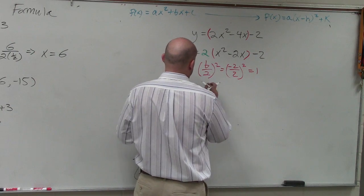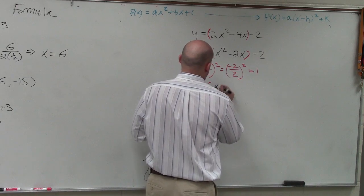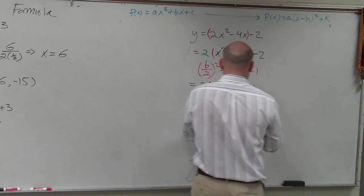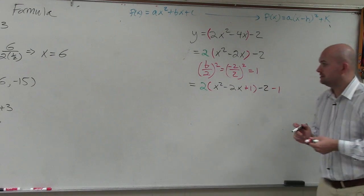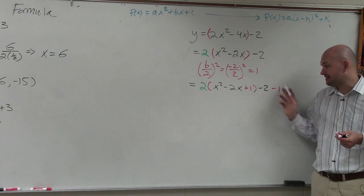So we have that green 2. Then we have 2 times x squared minus 2x plus 1 minus 2, and then minus 1. Did everybody see what I did? I took that 1. I added it inside the parentheses, and then I had to subtract it.